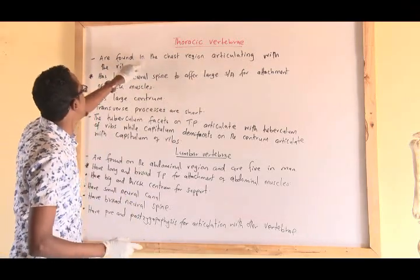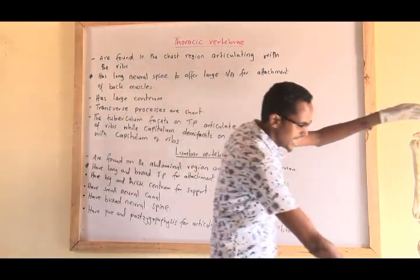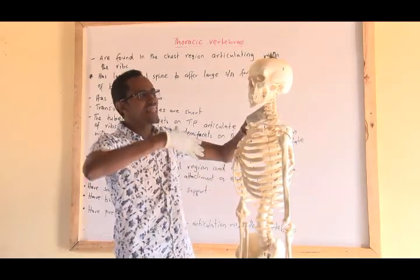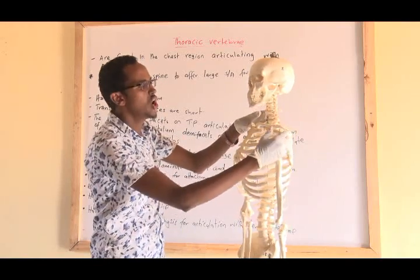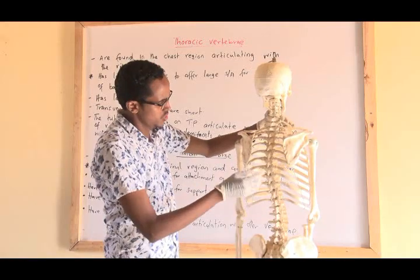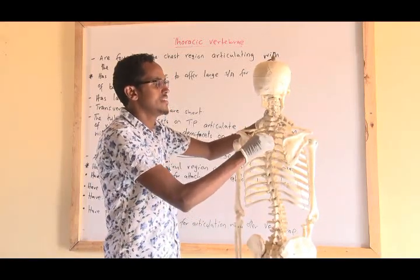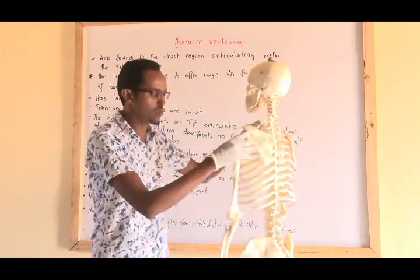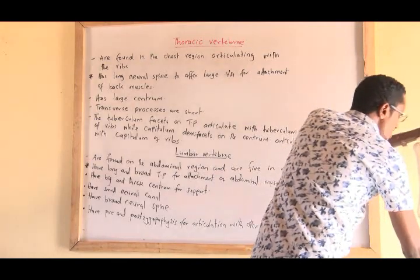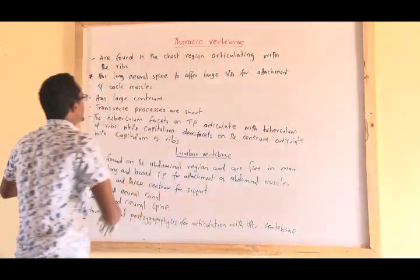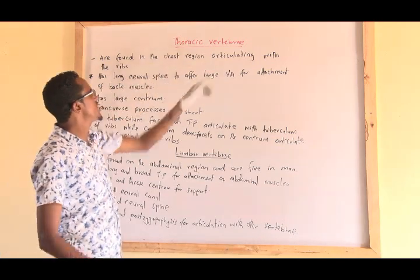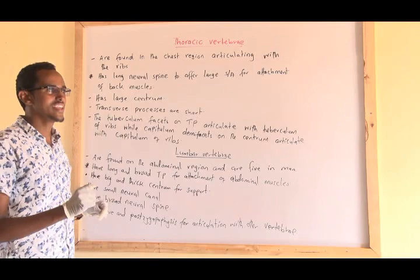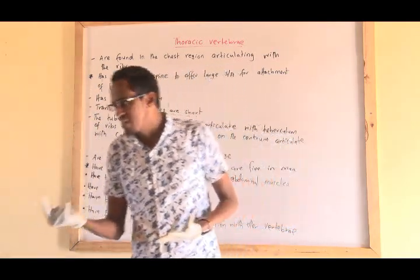Thoracic vertebrae are found in the chest region, articulating with the ribs. The ribs are attached to the vertebral column at the back. These bones that articulate with the ribs are what we call thoracic vertebrae — bones found around the chest region. How can we distinguish them from other vertebrae?